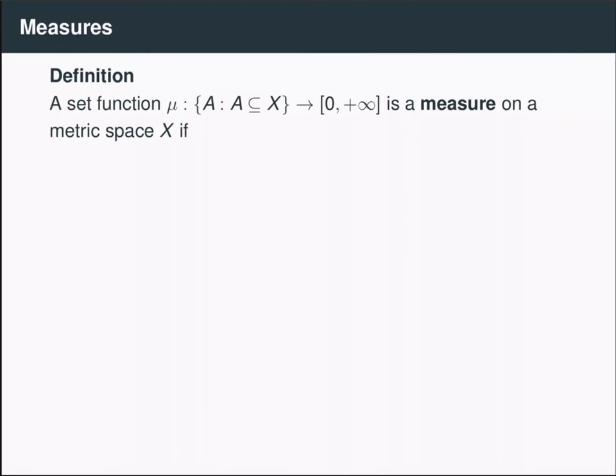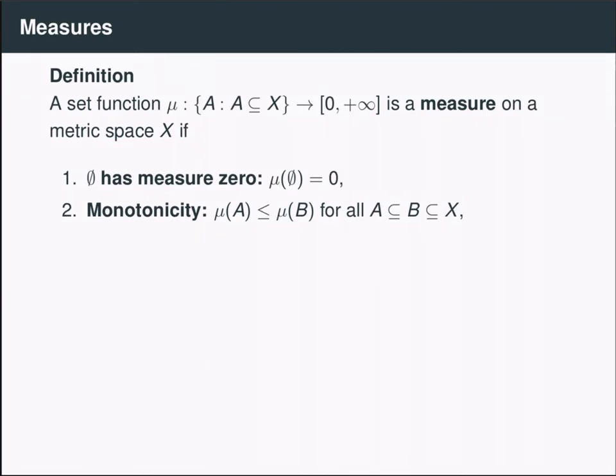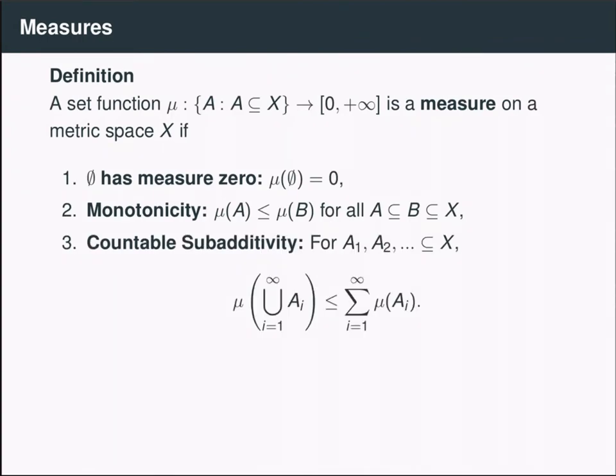So in this class, we're going to define a measure on a metric space X to be a non-negative set function satisfying the following properties. First of all, the measure of the empty set is zero. Second, the monotonicity property holds. So if I have set A contained in B, then the measure of A is at most the measure of B. And also, I have countable sub-additivity. So if I have a countable collection of sets, then the measure of their union is at most the sum of the individual measures.